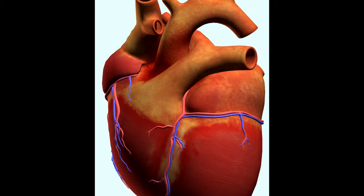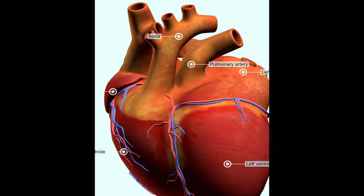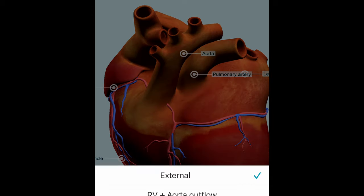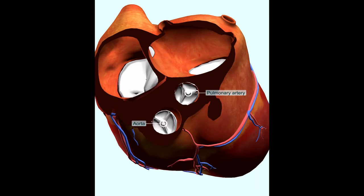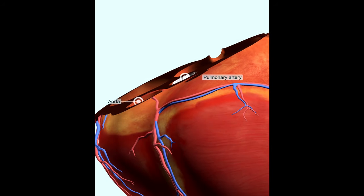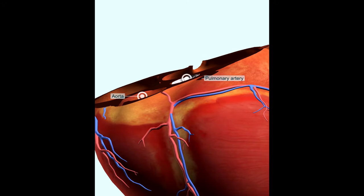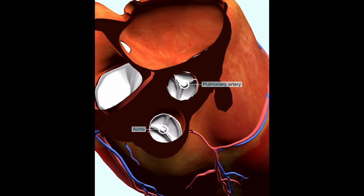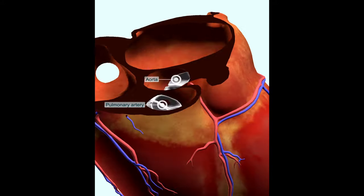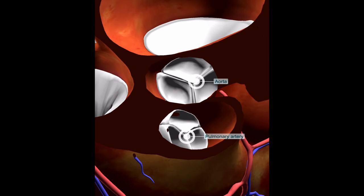Now, if we look at the transposition of the great arteries, you'll see those two are separated from each other, so you've got the aorta that sits at the front and the pulmonary artery that sits behind. A nice way to see this on echo is to get a short axis of the heart valves. In TGA the aorta and pulmonary artery are in the same plane as each other, which is obviously not the case in normal anatomy where they are in different planes.